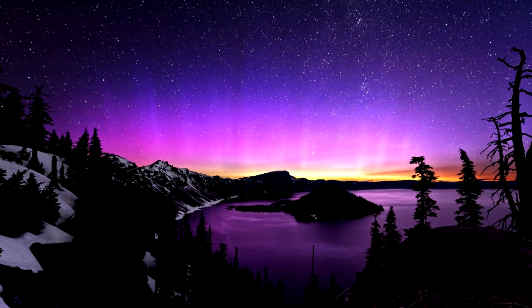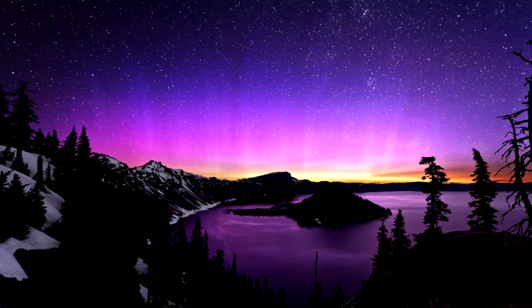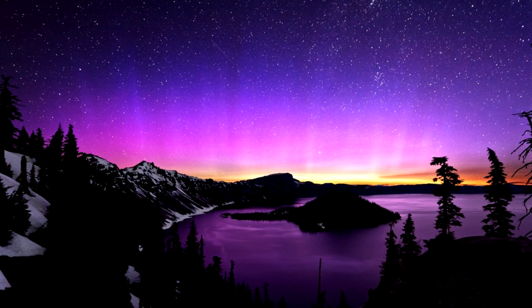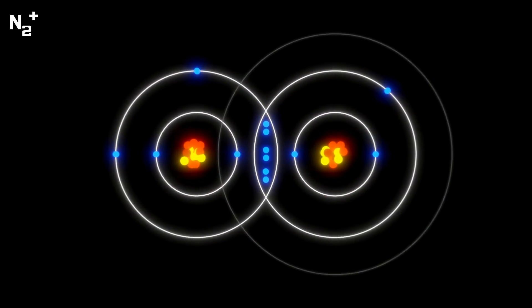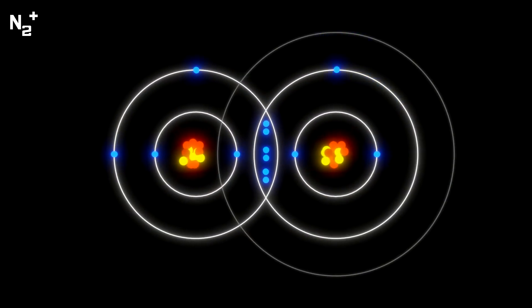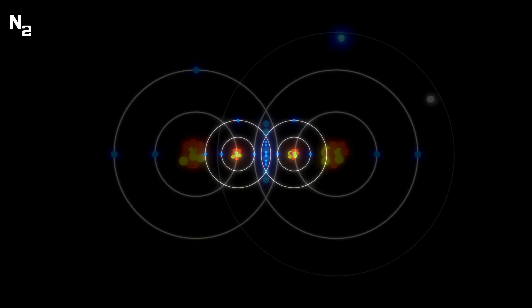Finally, from 80 kilometers to 100 kilometers up, pink is the most prominent color, as positively charged N2 and regular N2 emit purple and deep red respectively, and these combine to form pink.